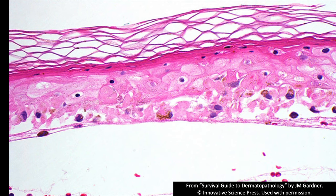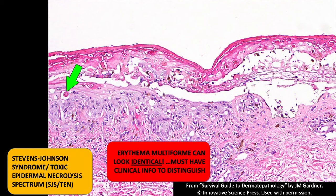This is full-thickness epidermal necrosis, lifted off the surface of the skin — it's a blister roof. The corneal layer still looks very basket weave and normal, which means this happened very rapidly, probably in a day or two. Looking at another area at the side of the blister, we see dying keratinocytes and a blurry interface. This case ended up being Stevens-Johnson syndrome / toxic epidermal necrolysis spectrum, TEN.